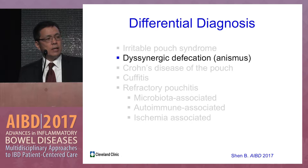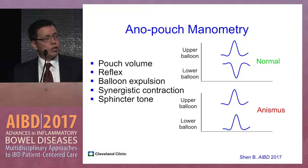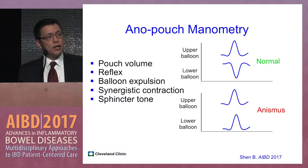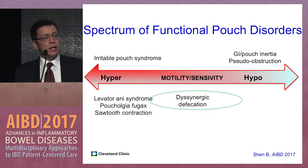For anismus, you can use manometry to detect it. Typically, when the pouch contracts, the pelvic floor muscle should relax — that is the normal pattern shown in the upper panel. In anismus, shown in the lower panel, the pouch contracts and the anal sphincter or pelvic floor muscle contract simultaneously. The treatment for anismus is biofeedback.